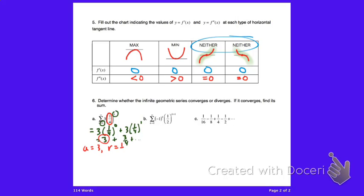We note that a equals three and the common ratio is one-fourth. Since the absolute value of r is one-fourth, which is less than one, this infinite geometric series converges. The sum equals the first term divided by one minus the common ratio: three divided by (1 − 1/4) = three divided by three-fourths = three times four-thirds = four. So the sum is four.